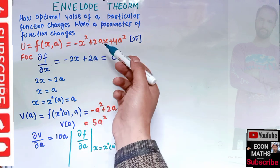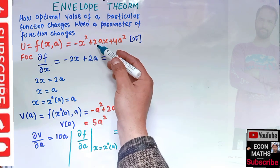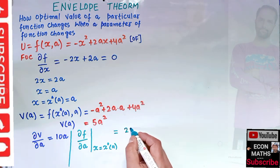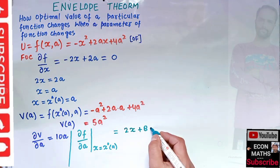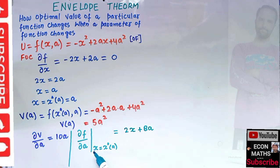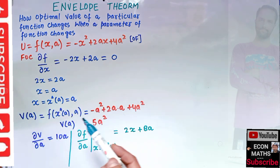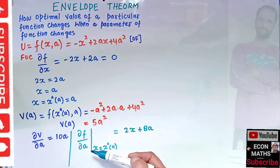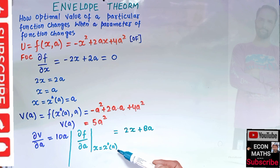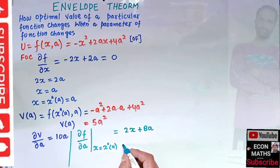Taking the derivative of the objective function with respect to a: the first term has no a, so its derivative is zero; the derivative of 2ax with respect to a is 2x; and the derivative of 4a squared is 8a. So df/da equals 2x plus 8a.